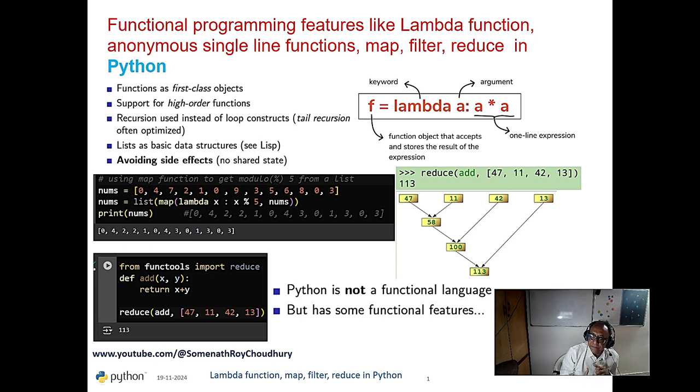C++ have added object-oriented features into it. C++ have both the features, procedural and object-oriented features. So that is the reason C++ is a very powerful language still today.